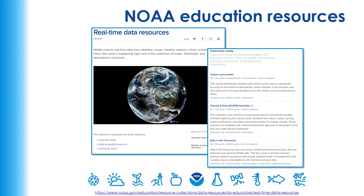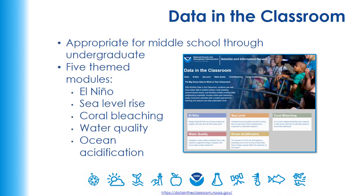First up is Data in the Classroom. This website has five modules on different topics — there's no order and you can choose to do one, several, or all of them. Each topic has a scaled learning approach. It starts at a very basic level, introducing graphs, x and y axes, false colored maps, and more. It builds up, and in the final level, students design their own research question and use NOAA data to answer it. It's very flexible for what you want to do with your students.